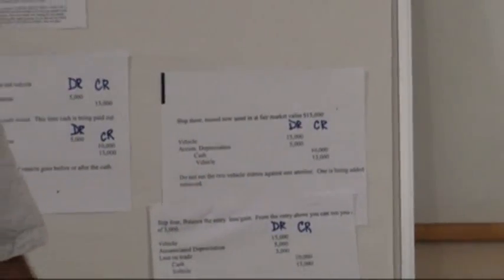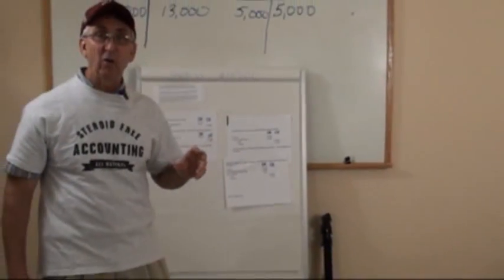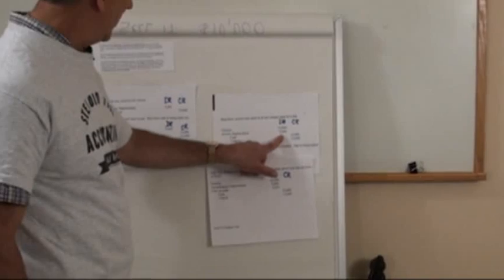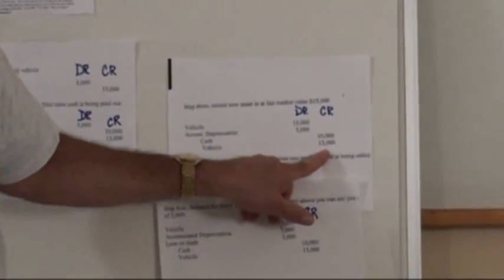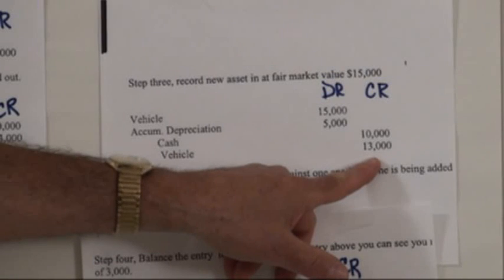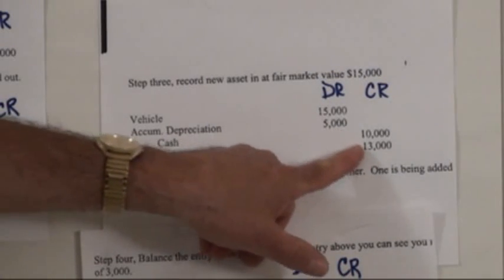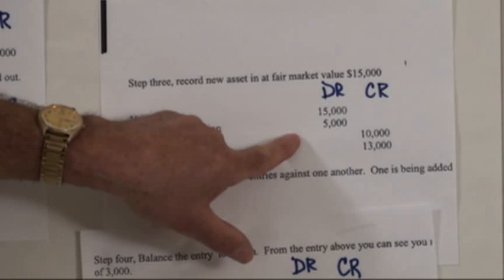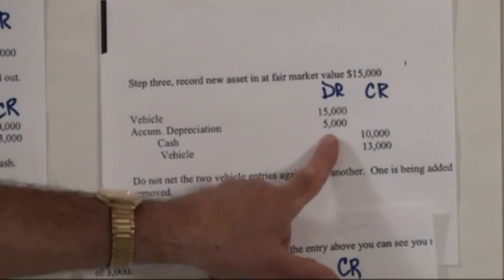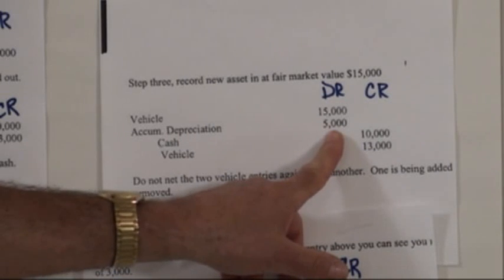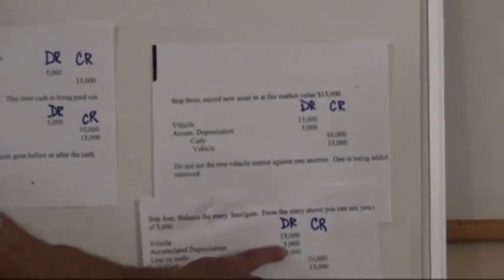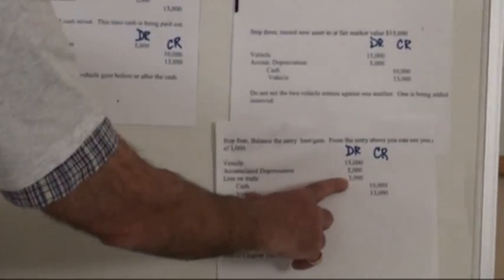Our last step, as in all of them, is to always balance the journal entry out with a debit or credit. Losses are debits and gains are credits. Looking at this entry, I have a $20,000 debit and a $23,000 credit — the entry is out of balance by $3,000. There's $23,000 on the credit side and $20,000 on the debit side, so I need to make a $3,000 debit, which is a loss on the trade. Now I've added it and I have the loss on trade — the entry is balanced and I've followed the four steps.